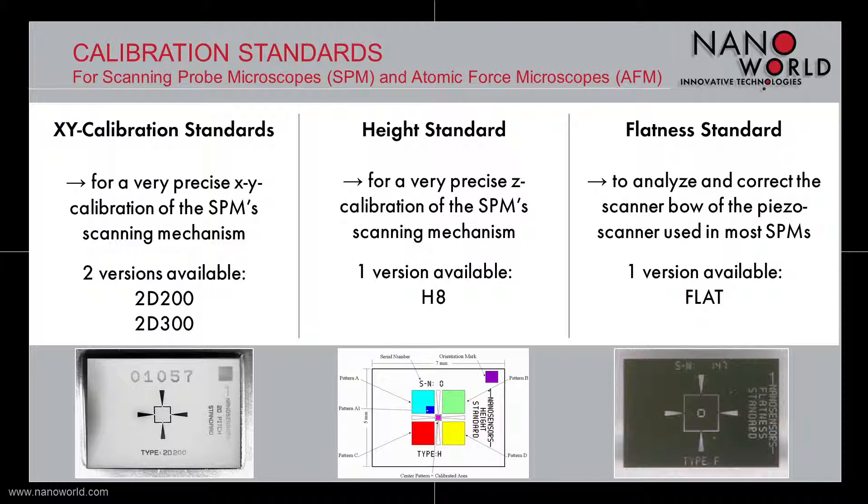NanoWorld offers three different categories of calibration standards. The first two categories are designed to calibrate the SPM or AFM scanning mechanism. The first one is dedicated to the calibration of X and Y axis and exists in two different versions, while the second one is meant for the calibration of Z axis.